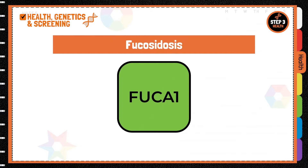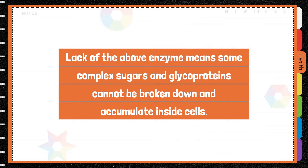Fucosidosis is a metabolic disorder due to the lack of the enzyme alpha-L-fucosidase in English Springer Spaniels. Lack of this enzyme means some complex sugars and glycoproteins cannot be broken down and accumulate inside cells.